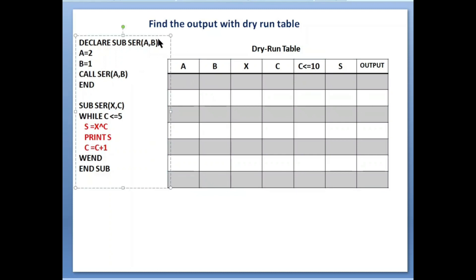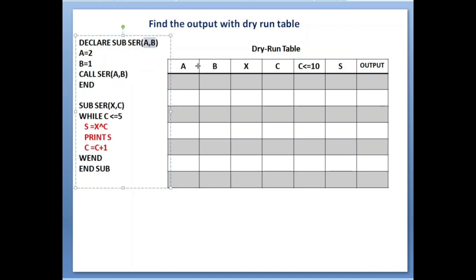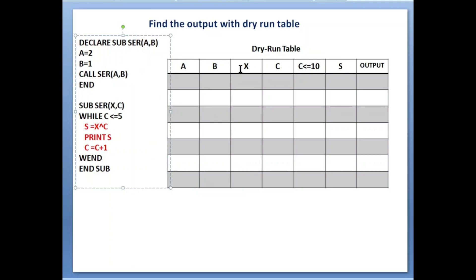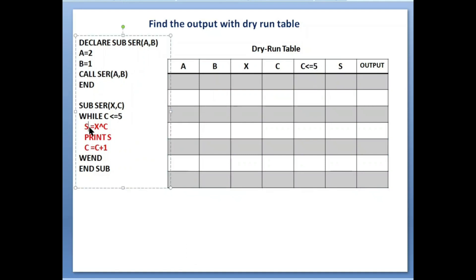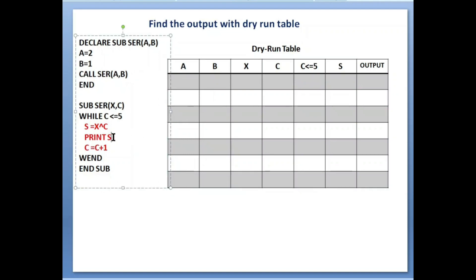Let's try this. The sub procedure is called 'ser' with parameters a and b. First of all, while making a table you need to write the variable names used in the program. I have written here a and b because they are used in the bracket. After that we can see x and c also used in the sub procedure, so x and c I have written here. Then we have the while condition: c less than or equals to 5.